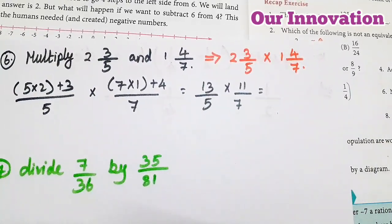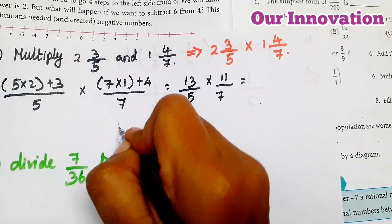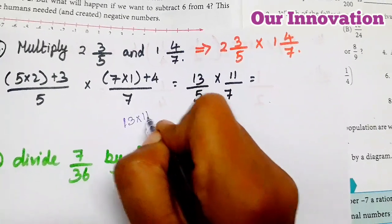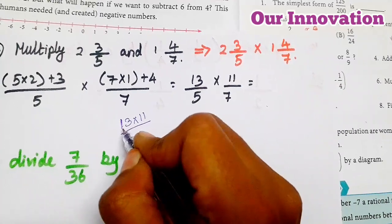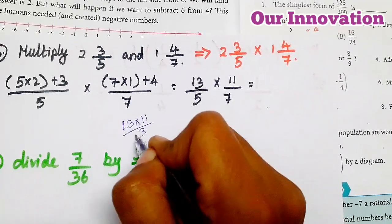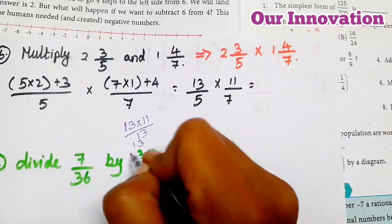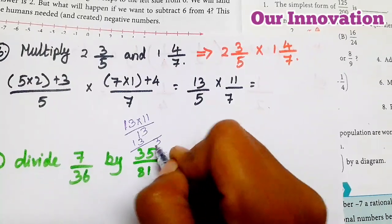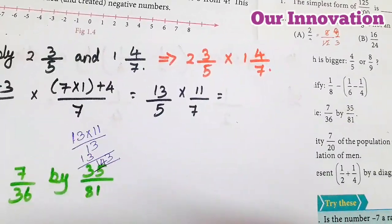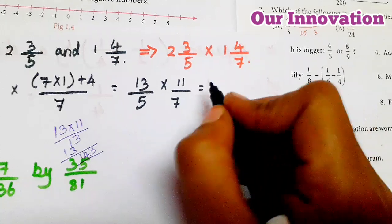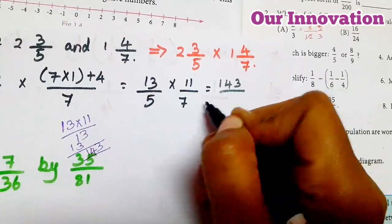Now multiply 13 × 11. So 13 × 11: 3 × 1 = 3, 3 × 1 = 3, 1 × 1 = 1, giving 143. So the numerator is 143, and the answer is 143/35.